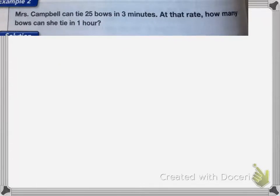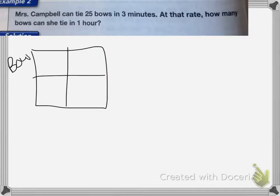For this problem, Mrs. Campbell can tie 25 bows in 3 minutes. At that rate, how many bows can she tie in an hour? I'll make a ratio box with bows and minutes. For the first case, she can tie 25 bows in 3 minutes.